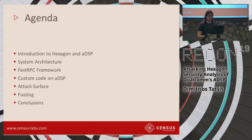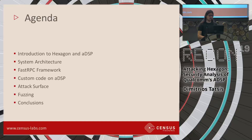Our agenda for today: first we're going to have a brief introduction to the ADSP and Hexagon. Then we're going to take a look into the system architecture. Next we're going to look in detail at the FastRPC framework, which is basically the communication between the ADSP processor and the rest of the system. Then we're going to look at how to run our own custom code on the ADSP, the attack surface exposed by ADSP, some security considerations, the fuzzing campaign we did on the ADSP, and finally some conclusions.